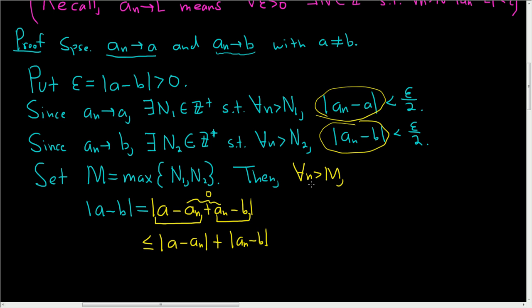And now because little n is bigger than capital M and M is the maximum of N1 and N2, we know that this first term here is less than epsilon over 2. Likewise, because little n is bigger than capital M and it's the maximum, we know that this second condition is also true. So this is less than epsilon over 2. So epsilon over 2 plus epsilon over 2 is epsilon. And we know something about epsilon. It's equal to this.